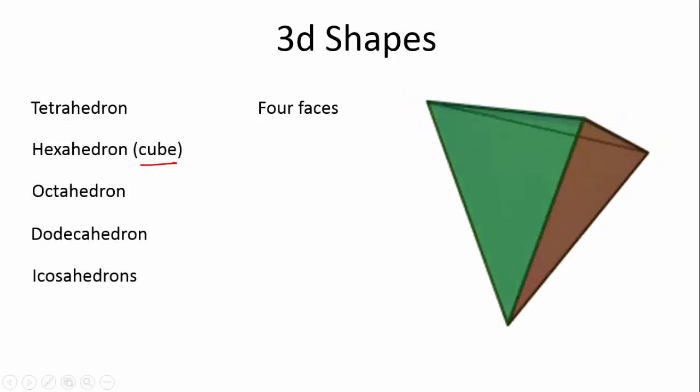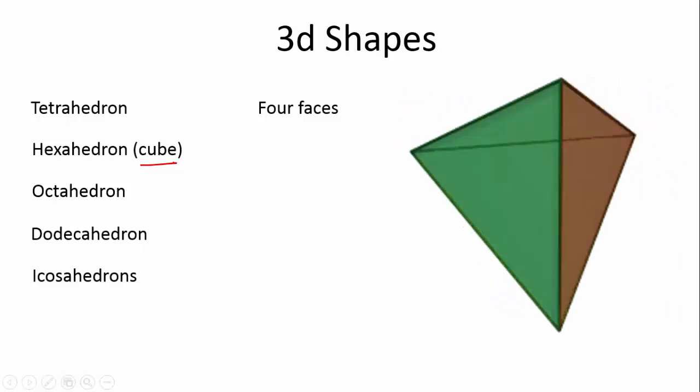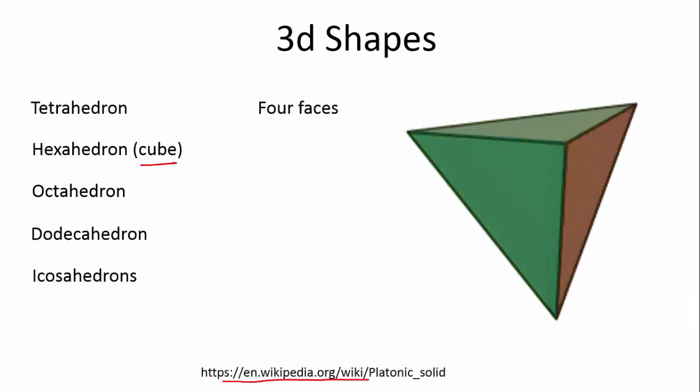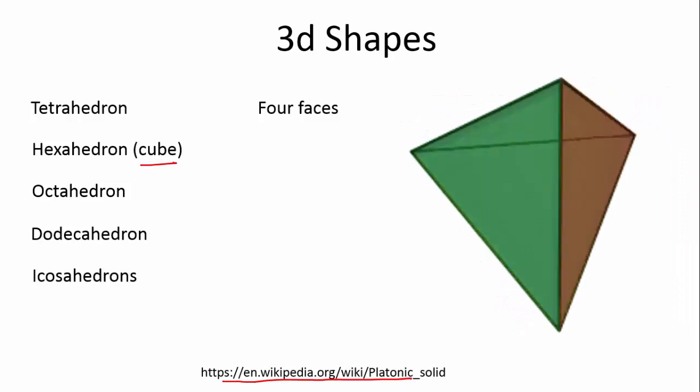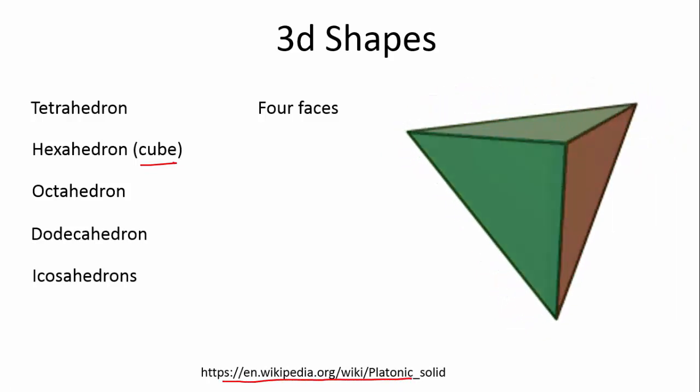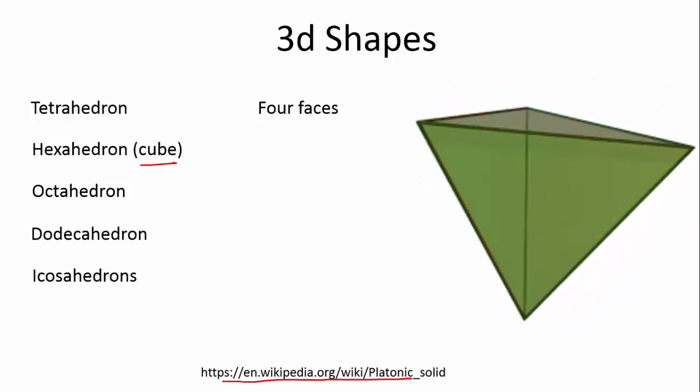So, a tetrahedron has 4 faces. Now, I'm going to show you this little animation here. It's very important, when you're dealing with something that you haven't made yourself, to reference where you get it from. So, this is from Wikipedia. If you want to go and have a look at this yourself, you can type that into your browser and go have a look at this diagram. So, a tetrahedron has 4 faces. Can you see the 4 faces here?